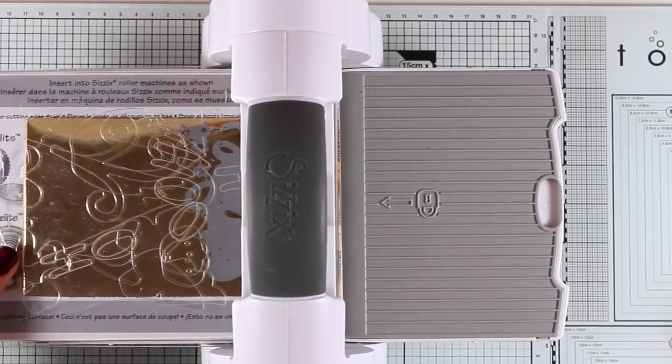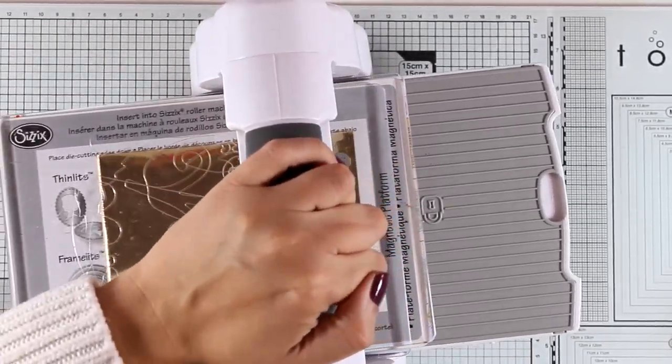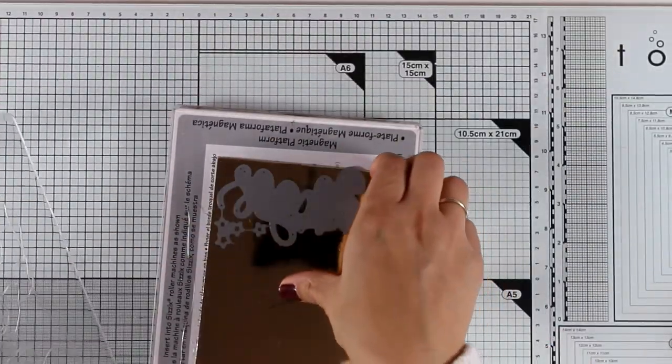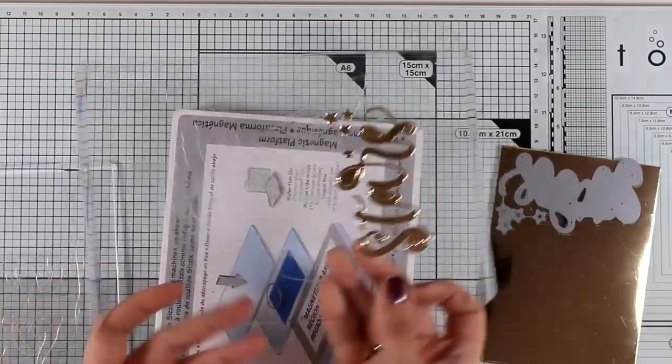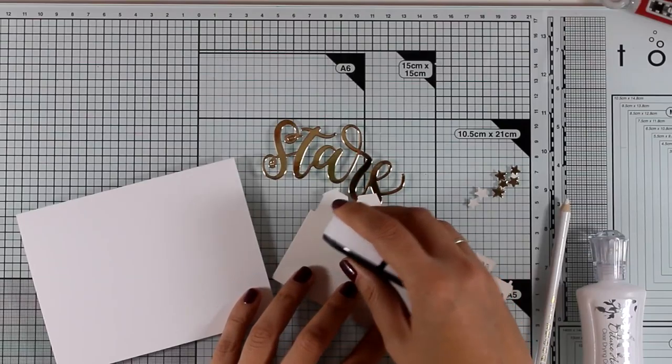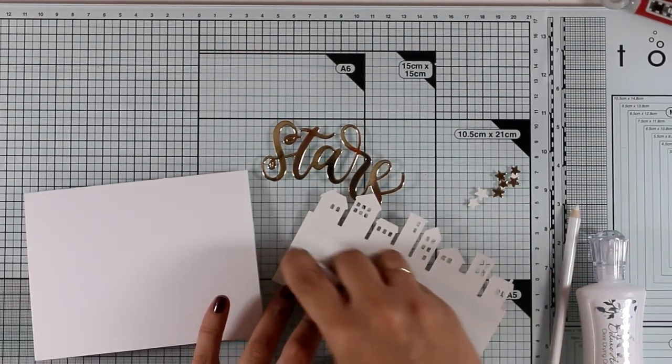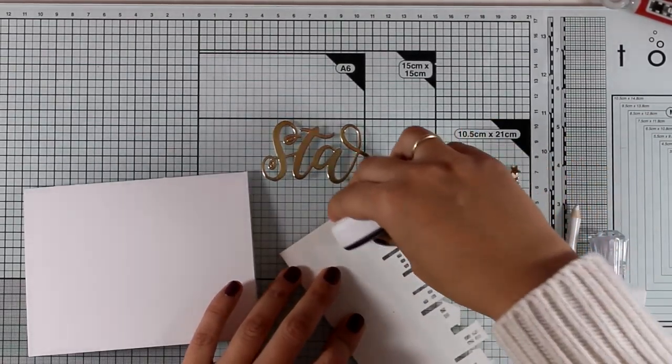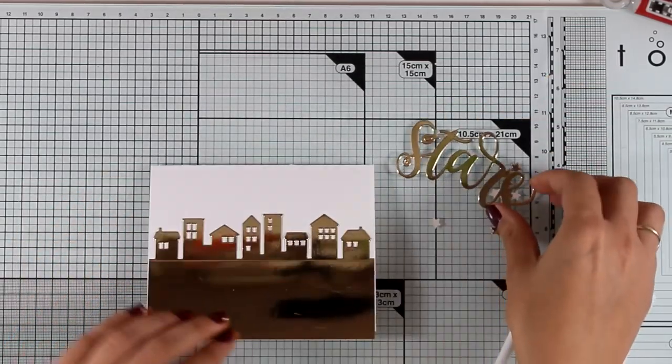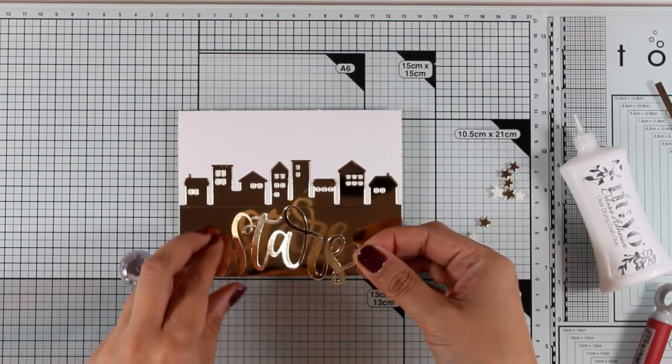Now I'm going for a very clean and simple looking card and I'm using the stars die to cut out the word 'stars' as well as tiny little stars. Again I'm using the exact same mirror cardstock that I used for cutting out the buildings. Now it is time to assemble my card. Again this is a very quick and easy card but really beautiful.